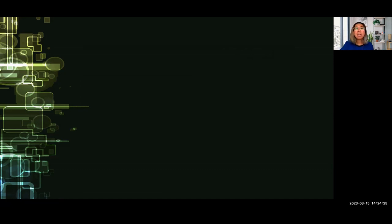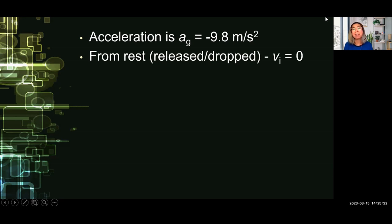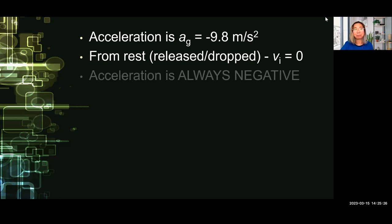Before we use these equations in a problem, let me first discuss what you need to consider in solving freefall cases. The first thing to remember is that for freefall cases, the acceleration we will be using is equal to the acceleration due to gravity. In some textbooks, this is denoted as G only — that's A sub G — and that is a constant value of negative 9.8 meters per second squared. The negative sign only denotes the downward direction. So remember that if the object is released or dropped, the initial velocity is equal to zero, and the acceleration is always negative.